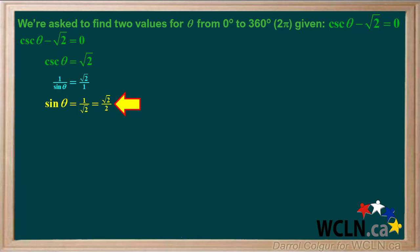Root 2 over 2 is the sine of 45 degrees, and we see that it's positive.